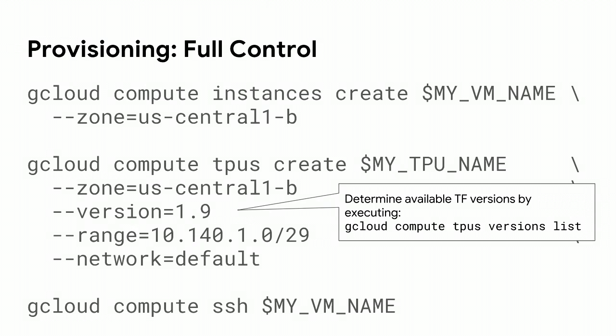When you create a Cloud TPU, you need to specify the version of TensorFlow installed. TensorFlow is not designed to work across different versions — if one node runs TensorFlow 1.8 and another runs TensorFlow 1.9, the errors are absolutely unintelligible. Additionally, you have to specify the network address range to give to the TPU so it can be peered onto your network. Check the list of routes, pick one that's unoccupied, and go for it.